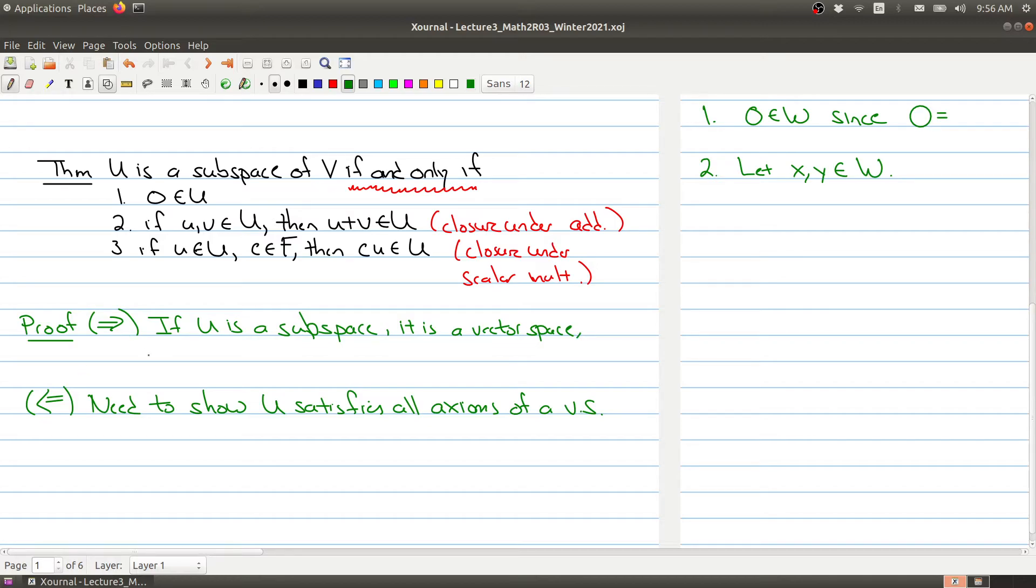So if U is a subspace, it is a vector space, so it satisfies all of those properties we talked about last class. And in particular it has to satisfy 1, 2, and 3, because all of these three conditions are properties that a vector space has to have. A vector space has to have zero, has to be closed under addition, and has to be closed under scalar multiplication. So one direction is easy. If you're a subspace you have to have these three properties. The real work comes in showing the other direction.